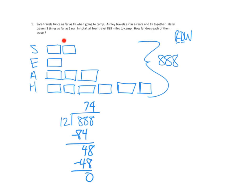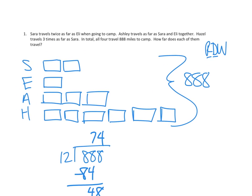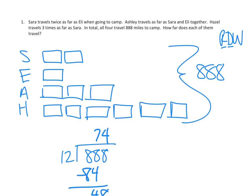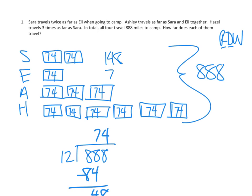So it looks like each of these boxes is 74. I'm going to zoom back out and start working with those. This is 74, and this is 74, and this is 74, 74, 74. Each of these boxes we figured out is exactly 74 miles long. Now I can start figuring out how far each of them went. Sarah — 2 copies of 74 is 148. Eli is already there: 74. 3 copies of 74 would be 222. And for Hazel, 6 times 74 — let's do that as multiplication — 6 times 74 is 444.